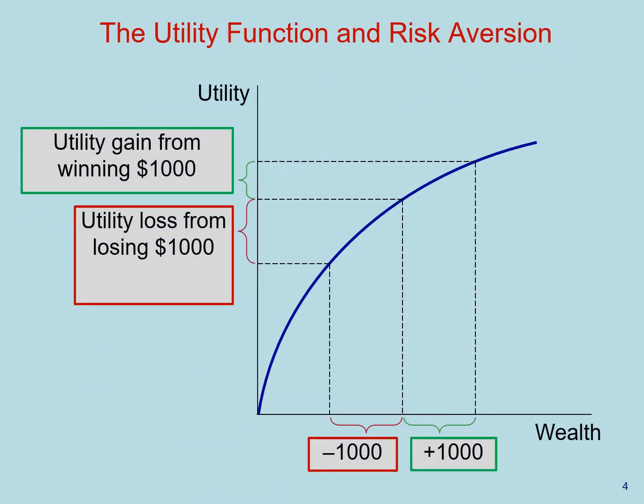Let's use a utility function to understand risk aversion. Suppose I offer you a gamble: we toss a fair coin, and if it's heads I give you $1,000, and if it's tails you give me $1,000. For the sake of the example, let's suppose your current level of wealth is W and your current level of utility is U.